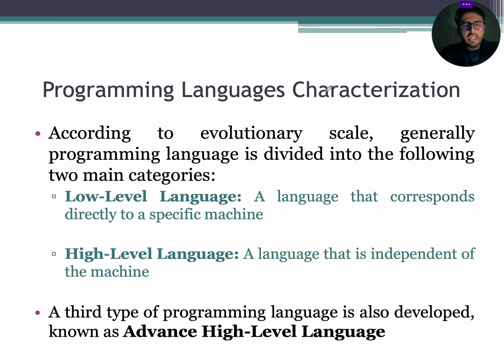According to evolutionary scale, generally programming language is divided into two main categories. Category number one, low level language, a language that corresponds directly to a specific machine.